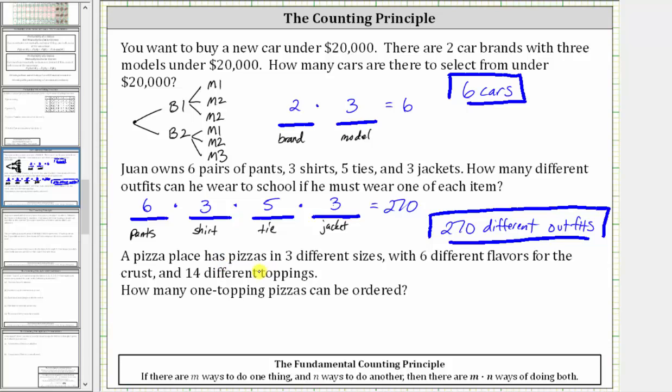Next, a pizza place has pizzas in three different sizes with six different flavors for the crust and 14 different toppings. How many one-topping pizzas can be ordered? So it is important to recognize we are talking only about one-topping pizzas.